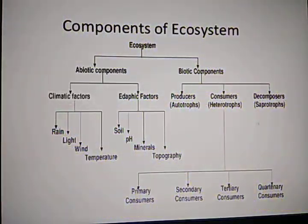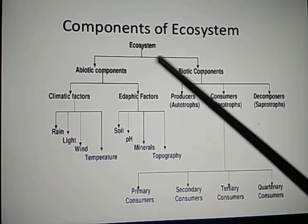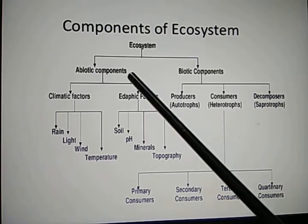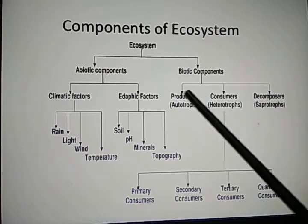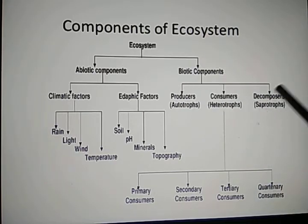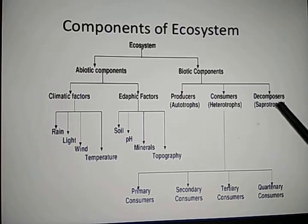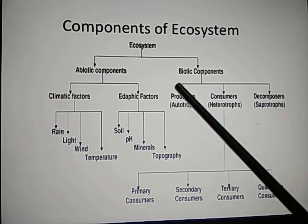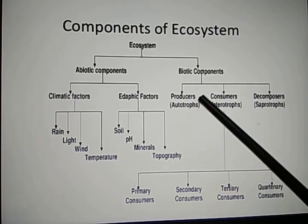We will see this flowchart which shows the components of ecosystem. Ecosystem is divided into two parts: abiotic component and biotic component. Biotic components are the living components. They are of three categories: producers, consumers, and decomposers.